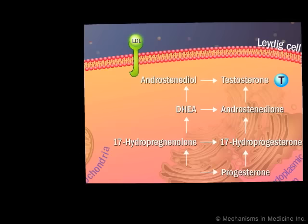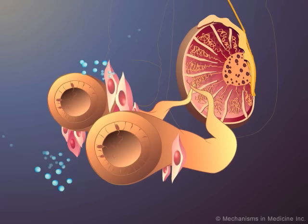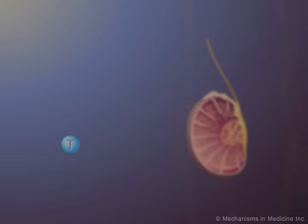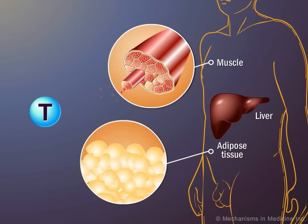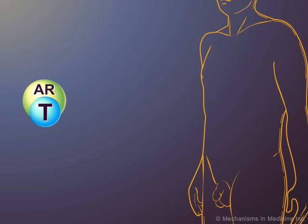Testosterone, secreted by the testes, diffuses into the peripheral circulation to be carried to target tissues. In liver, muscle, and adipose tissue, testosterone binds directly to its androgen receptor, or AR, to exert its biological effect.